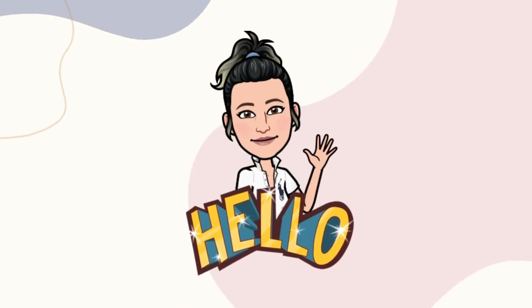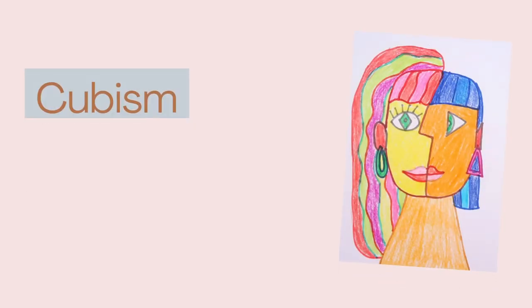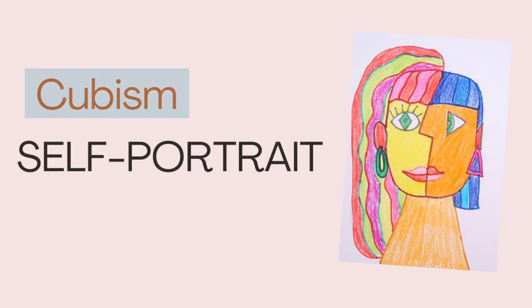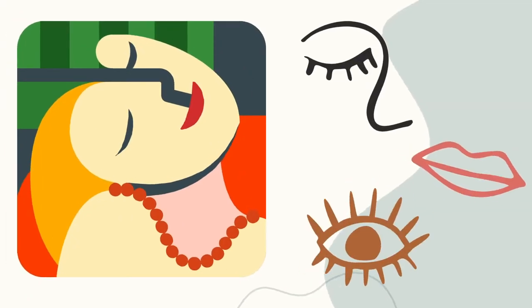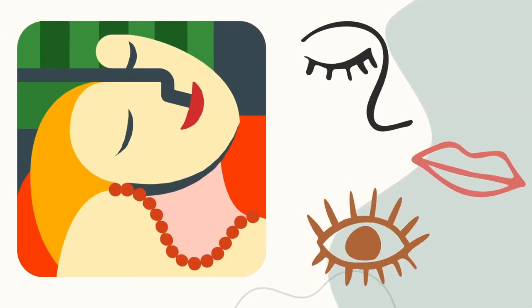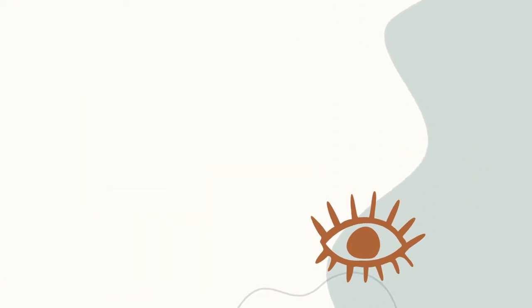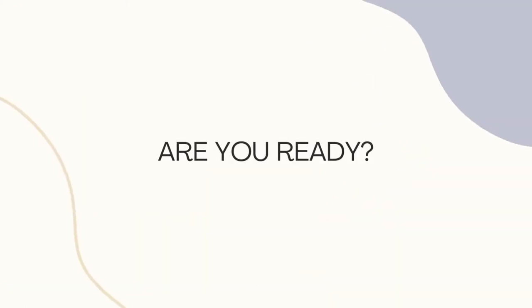Hello, learners! Today, we're going to create a portrait of ourselves using Cubism. Cubism is an art style where we use geometrical shapes to show a person or object from different angles at the same time. Are you ready? Let's begin!